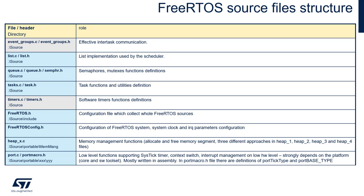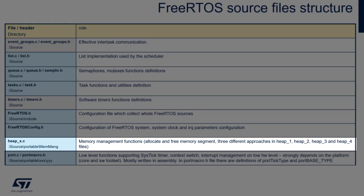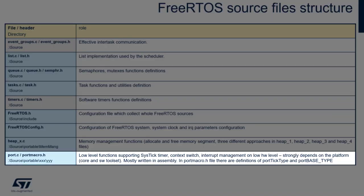All the core files are MCU-agnostic. To connect FreeRTOS with the STM32 hardware platform, additional files are needed: heap_x.c files, which contain memory management functions to allocate and release memory for each OS component; and port.c and portmacro.h, which contain the implementation of SVC, PendSV, and SysTick interrupt routines and the complete code to perform context switching on the STM32 platform.